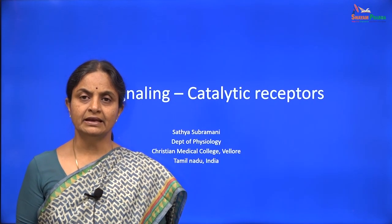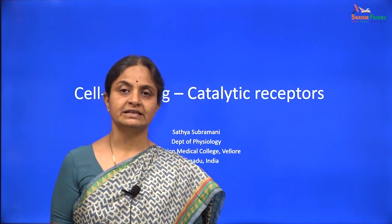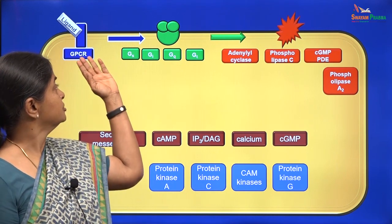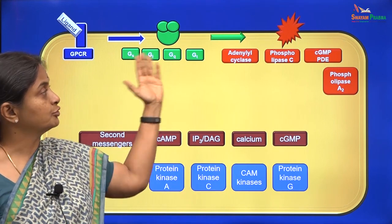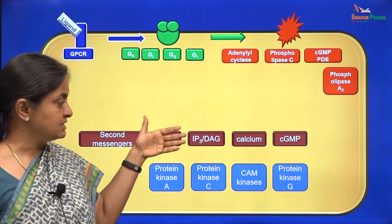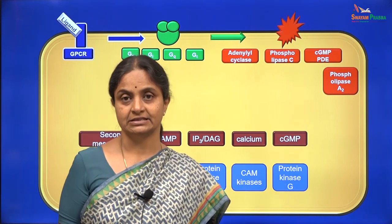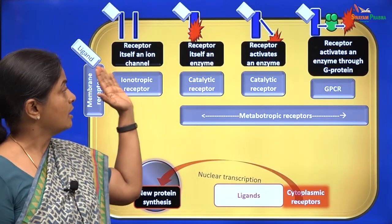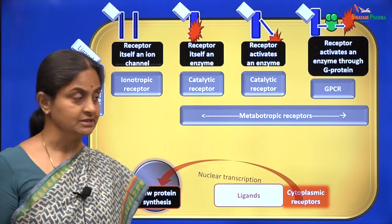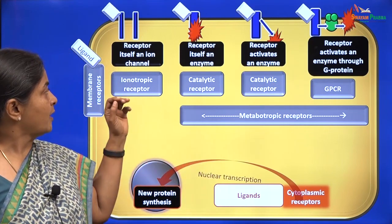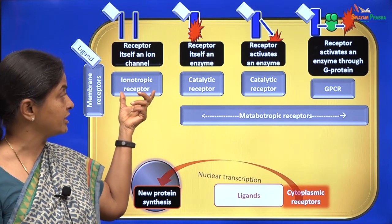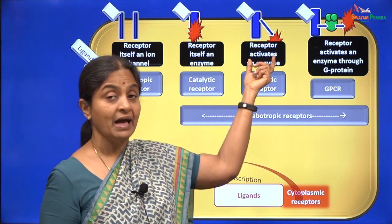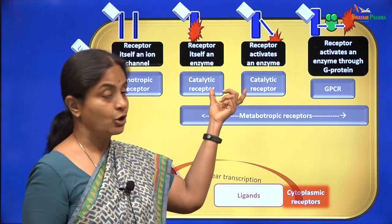We will now discuss signaling mechanisms due to catalytic receptors on the membrane. In the last session, we considered G-protein coupled receptors and their signaling pathways through G-proteins, membrane enzymes, second messengers and protein kinases. G-protein coupled receptors are one type of four types of membrane receptors. We have receptors which are ion channels themselves — ionotropic receptors — and receptors which are enzymes themselves or which activate an enzyme directly. These are called catalytic receptors.